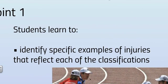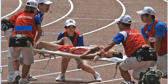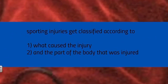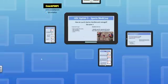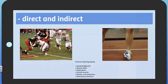The right-hand side of the syllabus requires you to have specific examples of injuries that reflect each of those three dash points. Sporting injuries get classified according to two different situations: what caused the injury, and what part of the body was injured. Direct and indirect injuries describe what caused the injury, while soft tissue, hard tissue, and overuse injuries describe what type of injury it was. Let's start with the first dash point: direct and indirect injuries.